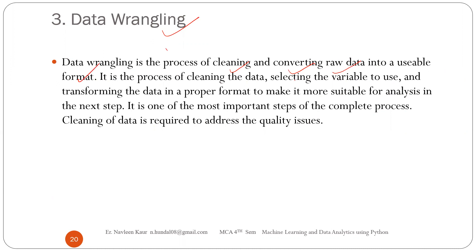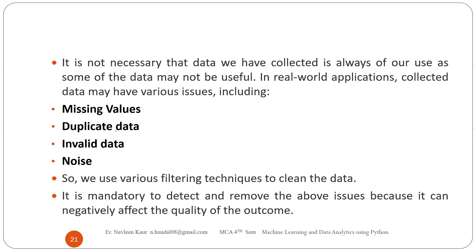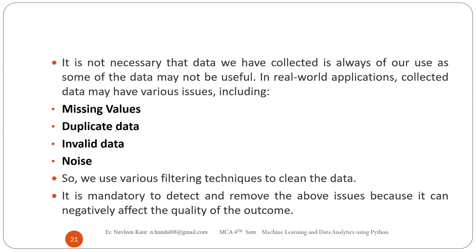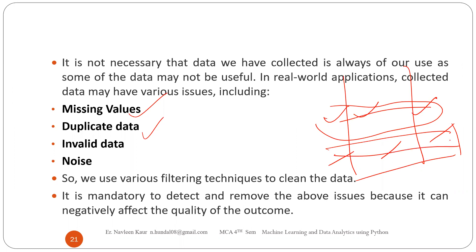Data wrangling is the process of cleaning and converting raw data into a usable format. We select the variables we want to use — suppose I have data with 10 columns but only need 3 for that machine, so I select only those. We need to transform it into a proper format to make it more suitable for analysis. In this phase, we are cleaning the data, which includes handling missing values and duplicate data — duplicate data means two rows where the same values are repeating.